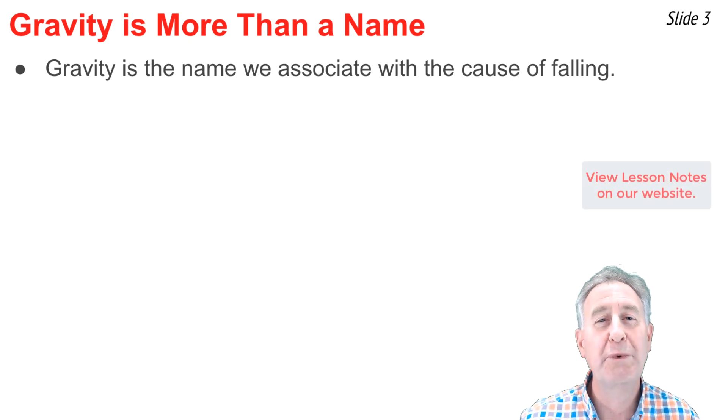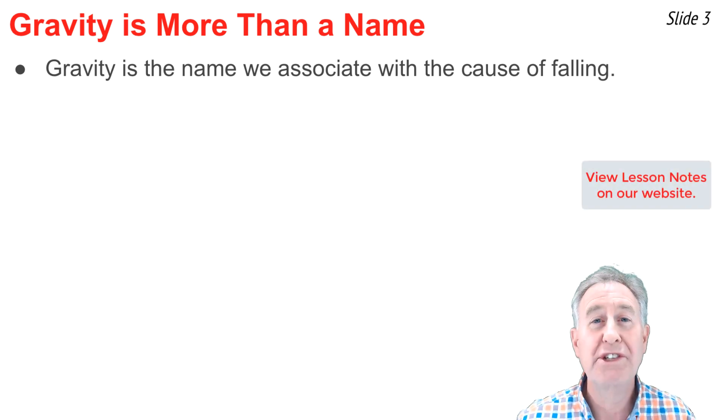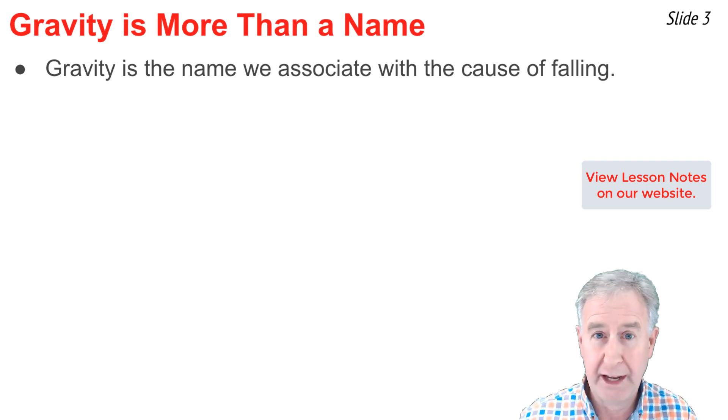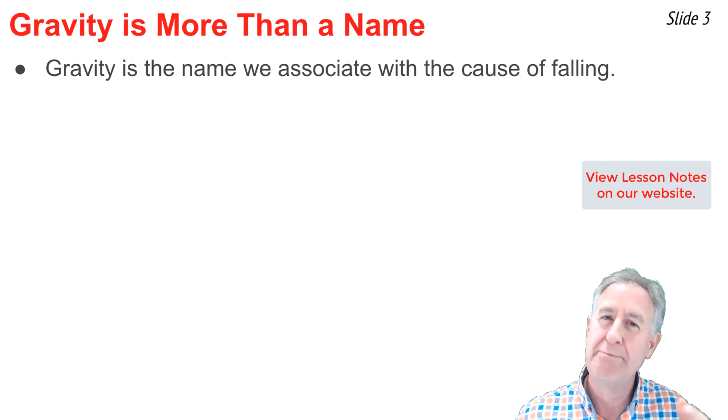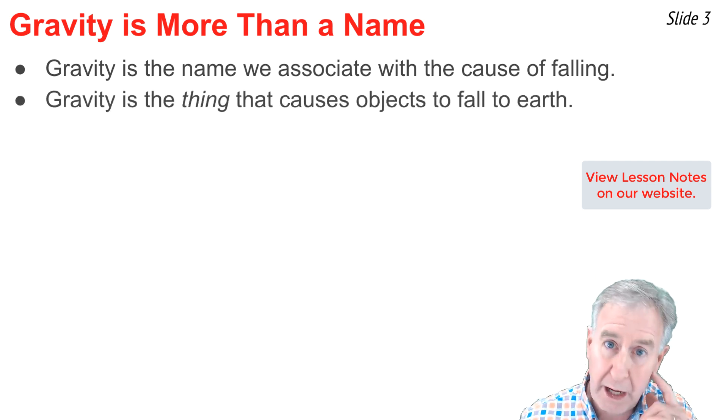Nearly every child knows the word gravity. Gravity is the reason the spilled milk falls off the breakfast room table. It's the reason our first bicycle ride had its grand finale, a fall to the concrete pavement. It's the reason what goes up must come down when we're jumping on that backyard trampoline. The fact is that gravity is that thing in our minds that causes objects to fall to earth.